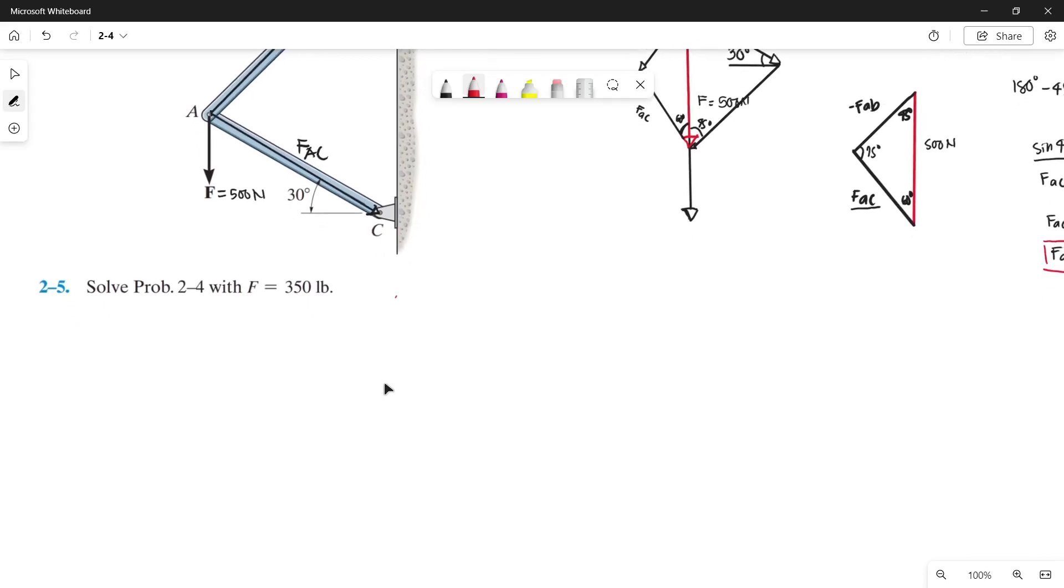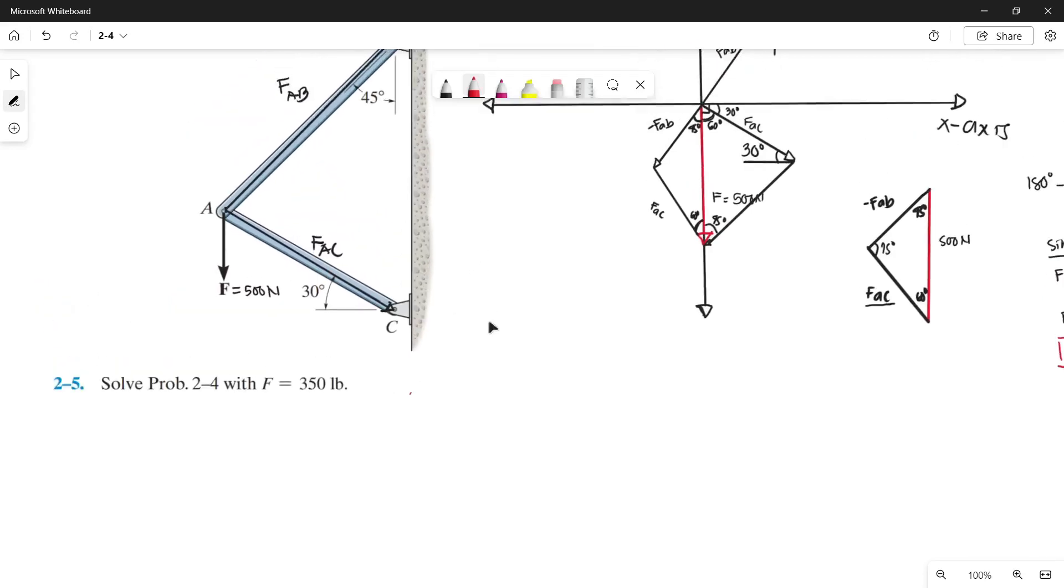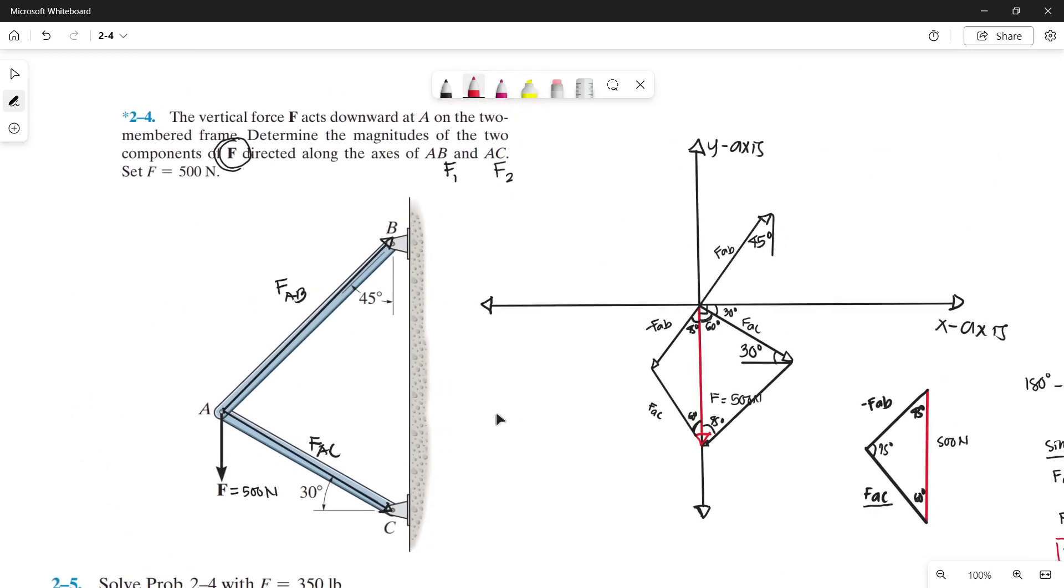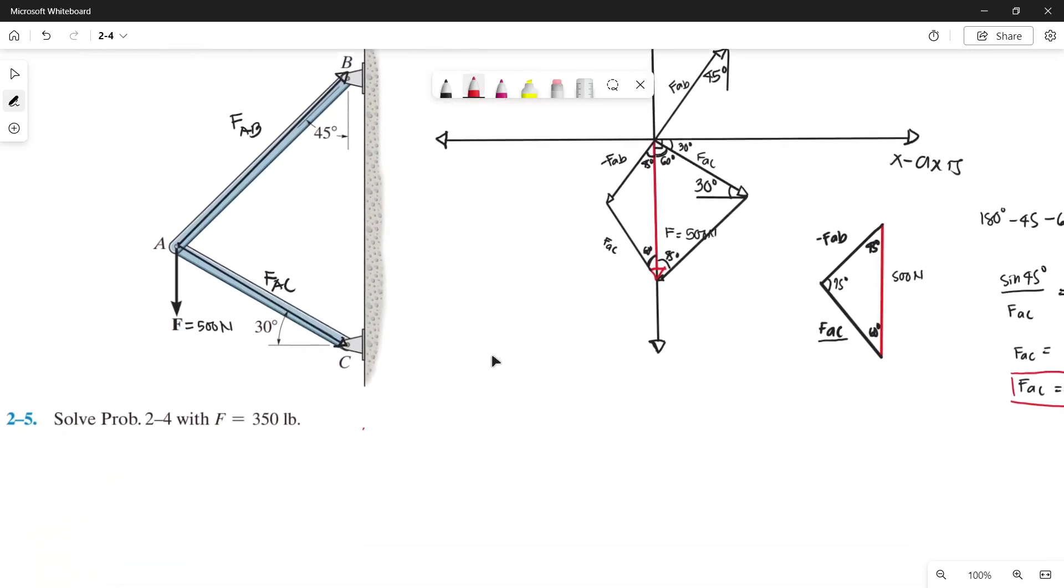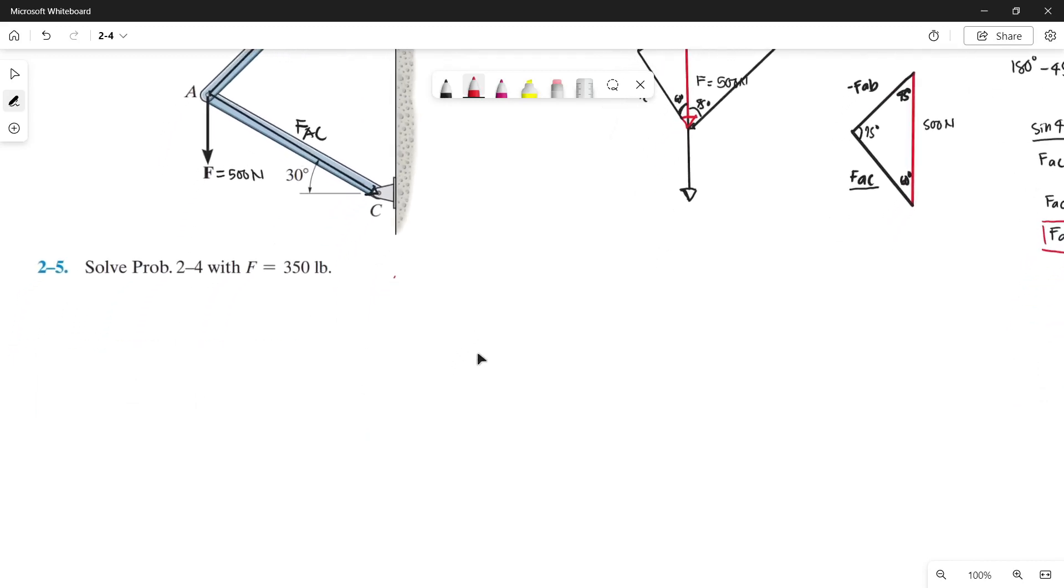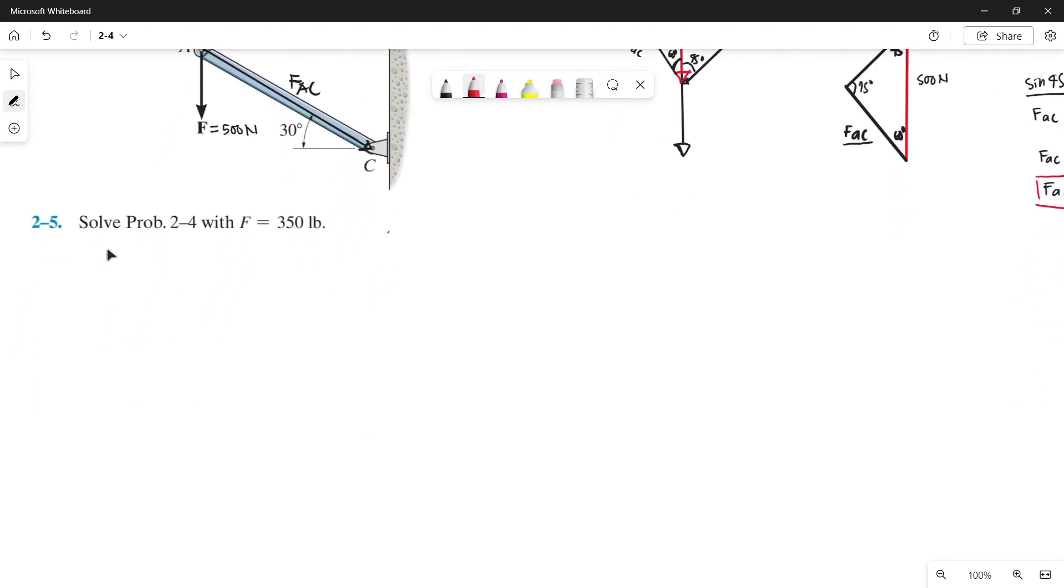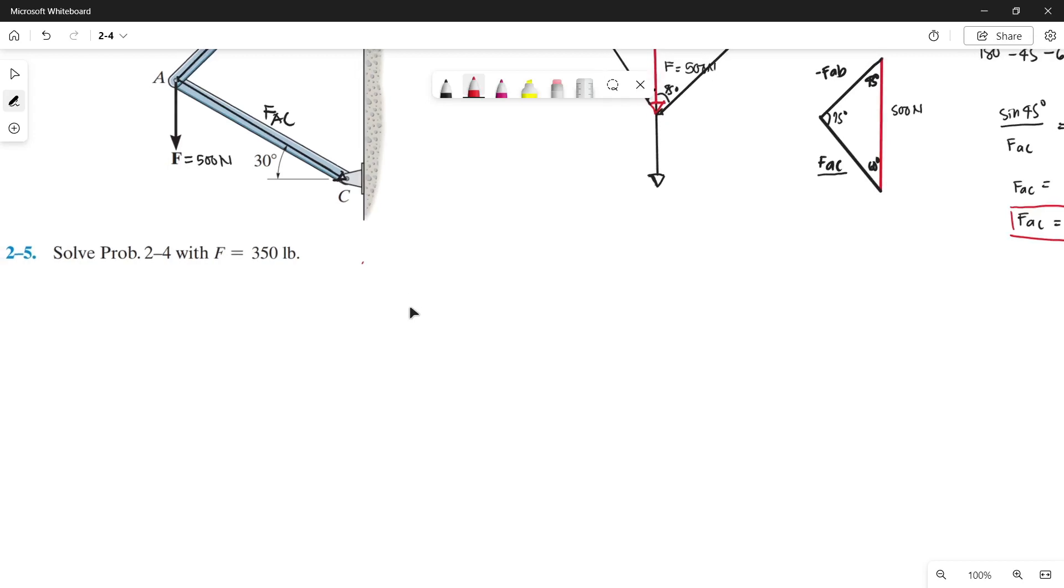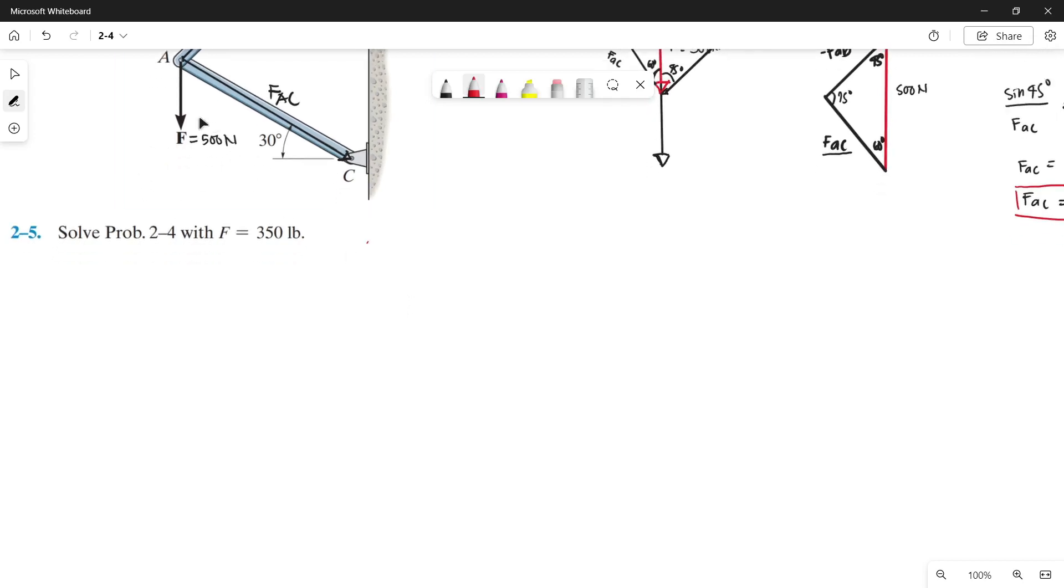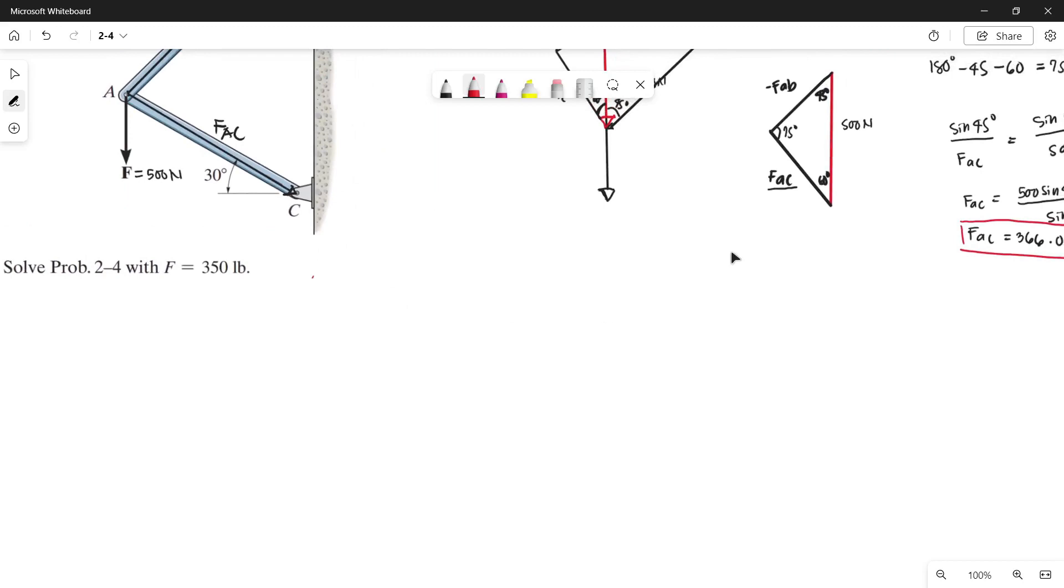Now let's proceed to problem number five. We already solved problem number four in chapter two in our previous video, so let's continue. Let's read: solve problem chapter two, number four, with force equals 350 pounds. So the only thing that has changed is the magnitude of our force.